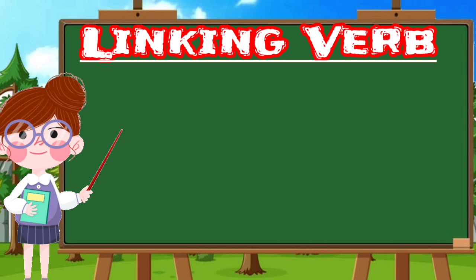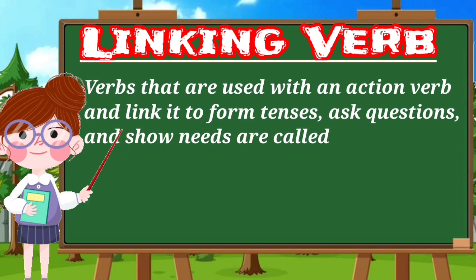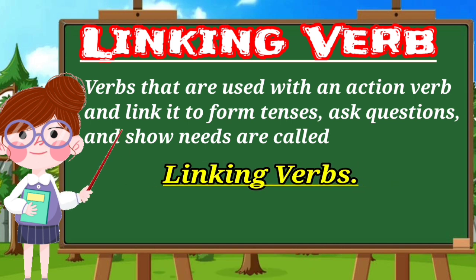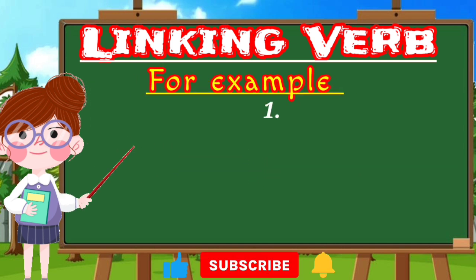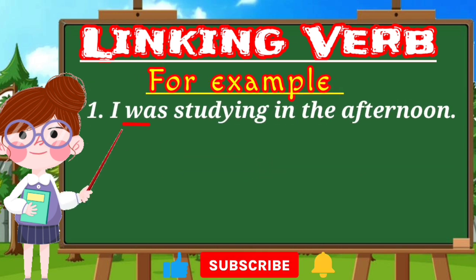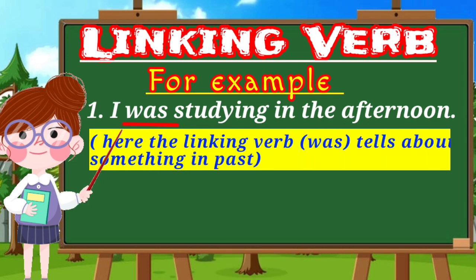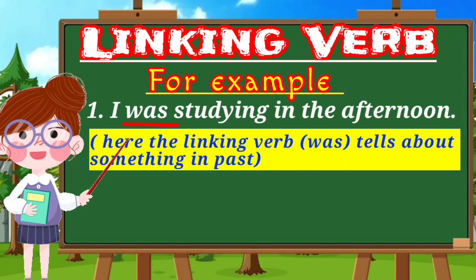Verbs that are used with an action verb and link it to form tense, ask questions, and show needs are called linking verbs. For example: 'I was steady in the afternoon.' Here the linking verb 'was' tells about something in the past.